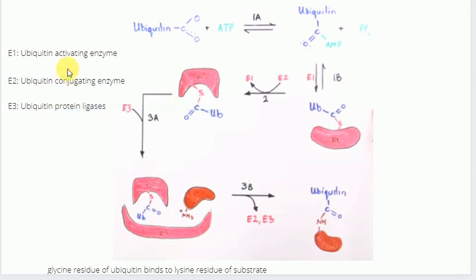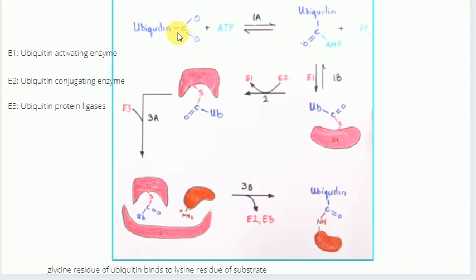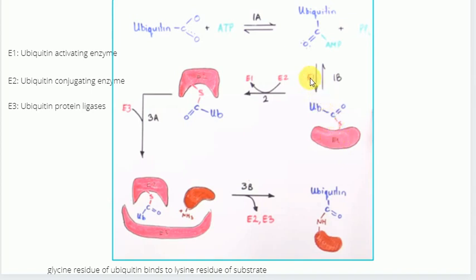These are the three types of enzymes that play an important role in the ubiquitination process. Looking at this picture, this blue molecule here is the ubiquitin molecule. When ATP is hydrolyzed, it will release pyrophosphate, and the AMP from the ATP will bind to the ubiquitin molecule, thereby forming the active ubiquitin molecule. After that, the ubiquitin activating enzyme, the E1 enzyme, will bind this active ubiquitin molecule to the sulfide group of the cysteine residue of the E1 enzyme.